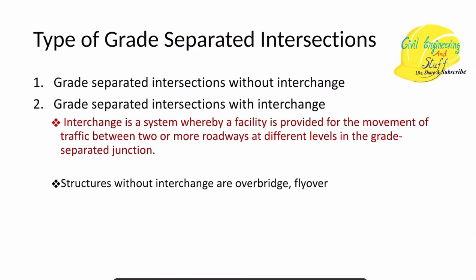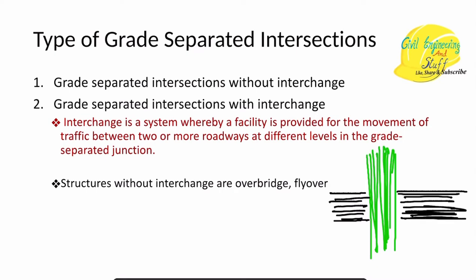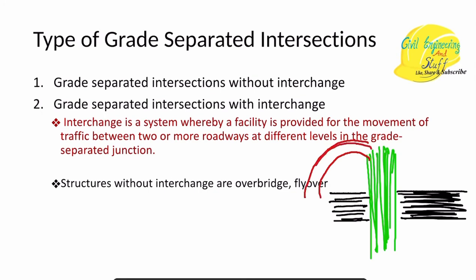To understand interchange, consider a road at higher elevation and another road going below it at lower elevation. Traffic on the higher road can move along its path, and traffic on the lower road can move along its own path. However, there is no facility for traffic to switch between the two elevations. So a road or facility is constructed that allows vehicles to move across roads present at different elevations.